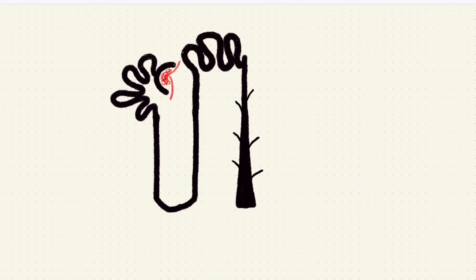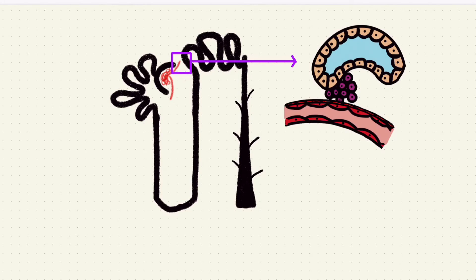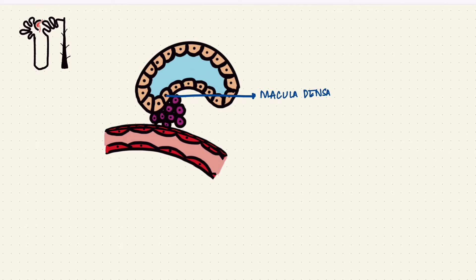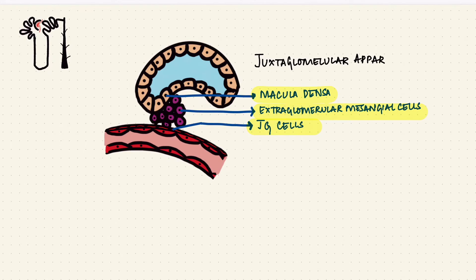At the distal end of the ascending limb of the loop of Henle, the early distal tubular cells are modified to form specialized cells called the macula densa. Those cells together with modified cells of the afferent arteriole called the juxtaglomerular cells and the extraglomerular mesangial cells, all three, they form the juxtaglomerular apparatus, the JGA, and that's important for the regulation of the glomerular filtration rate.